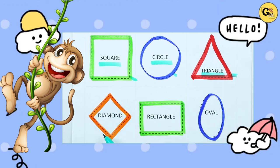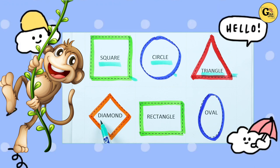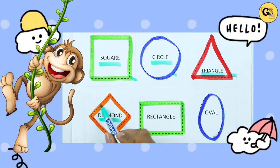Which shape is this? Diamond. D-I-A-M-O-N-D. It's a diamond with orange color.